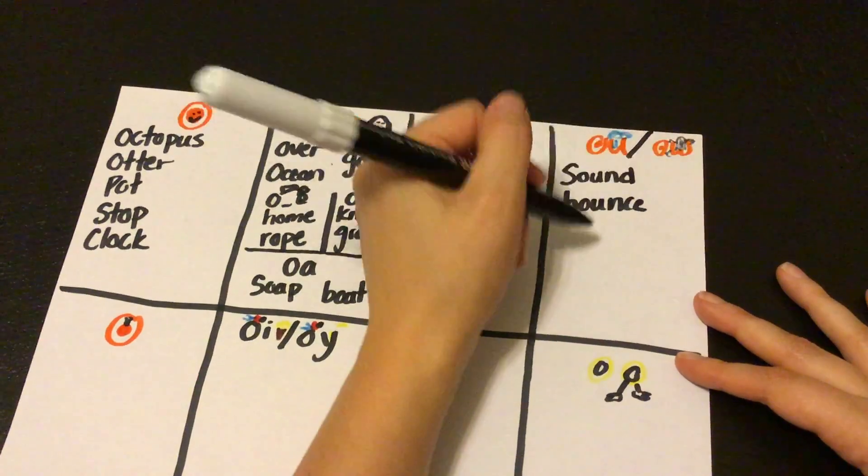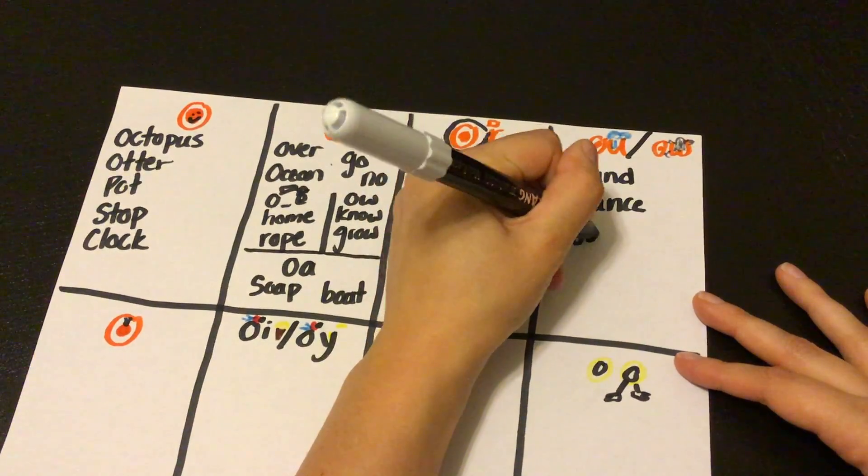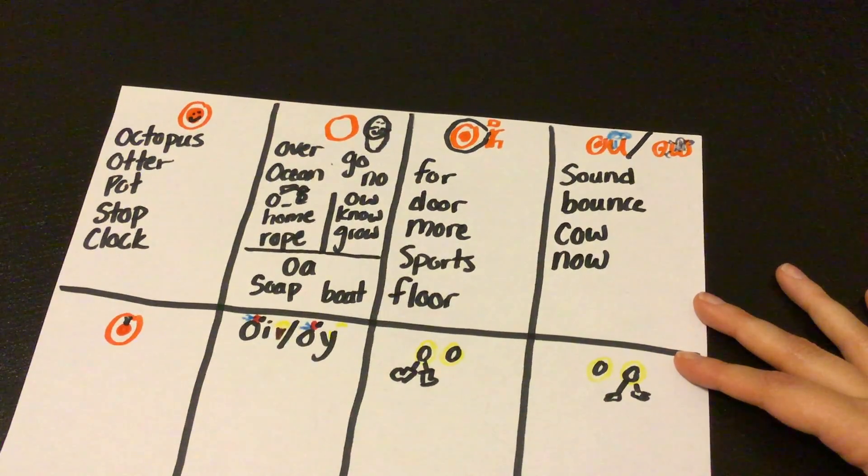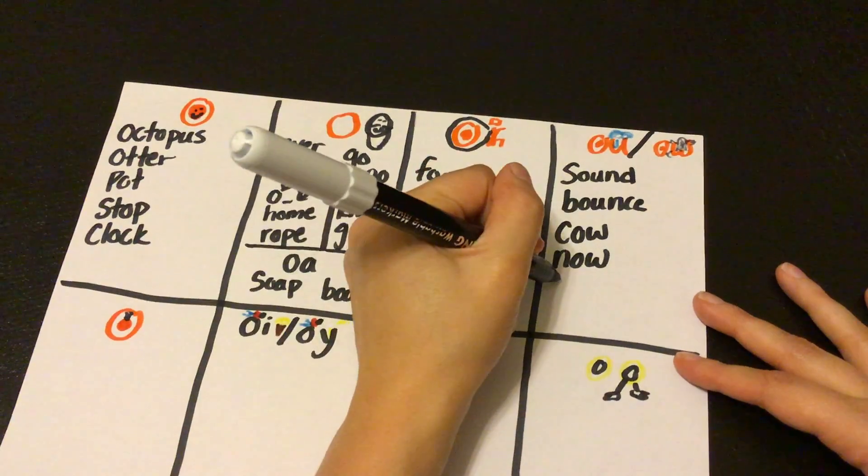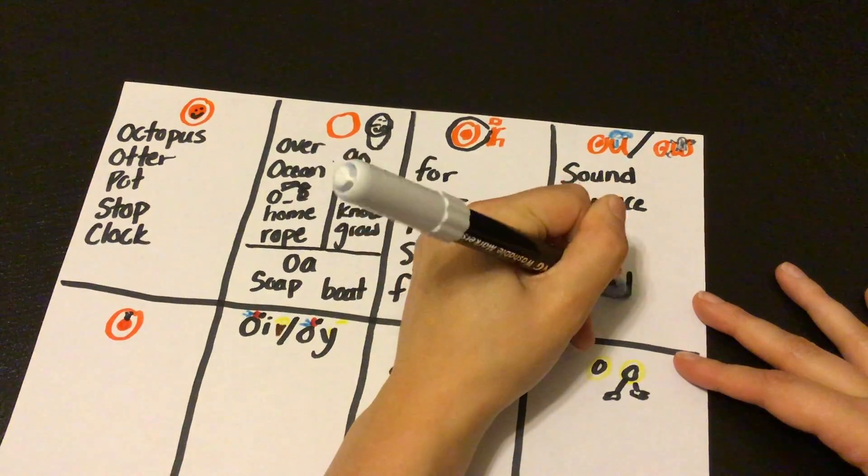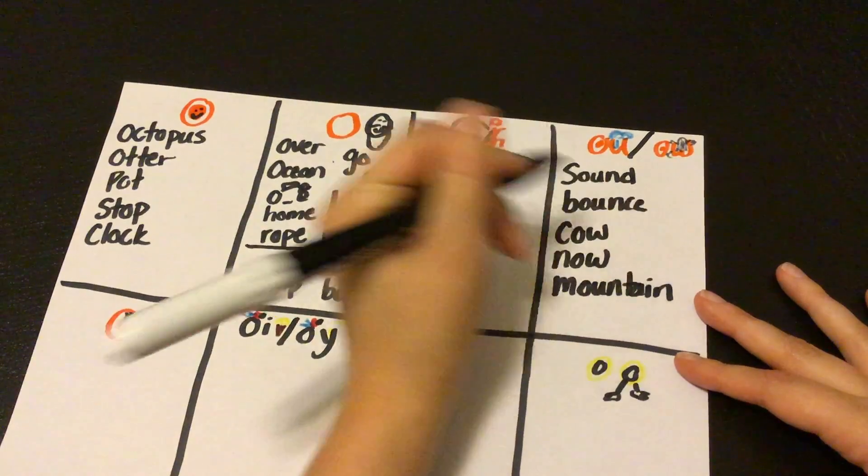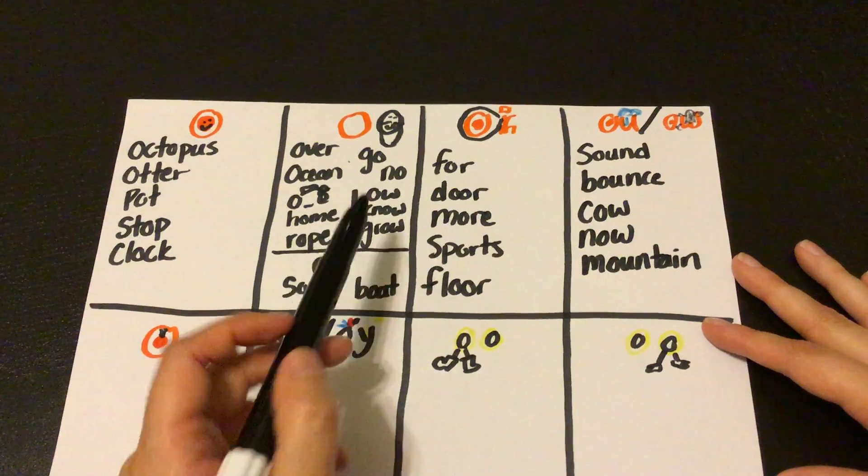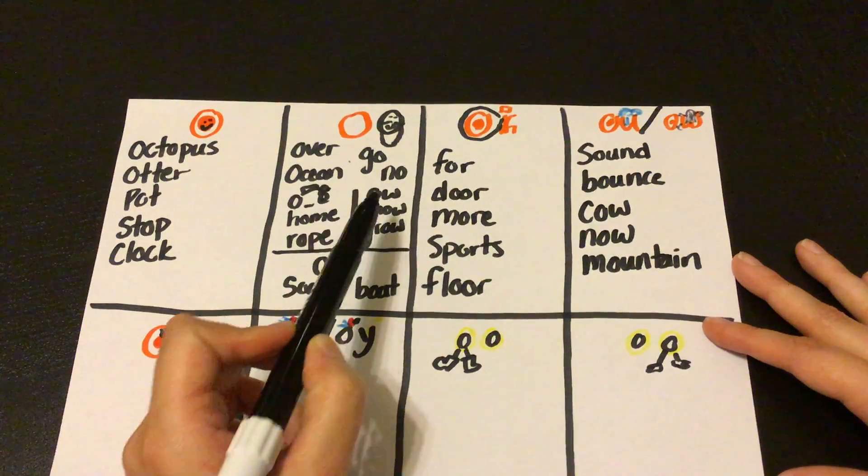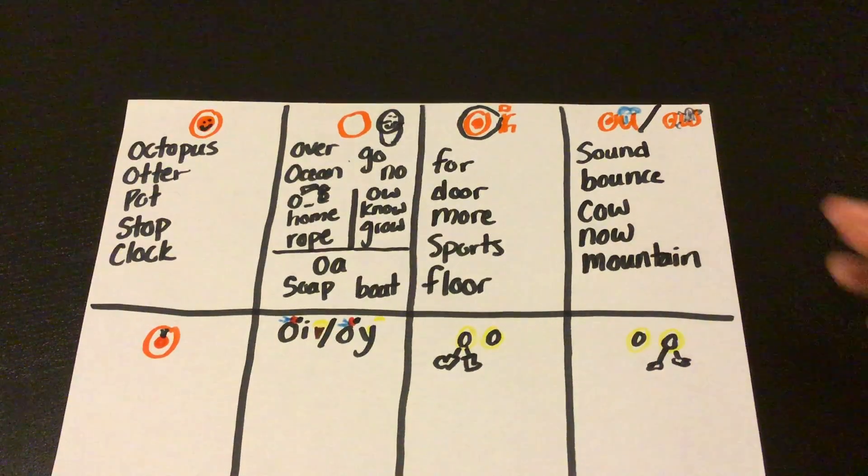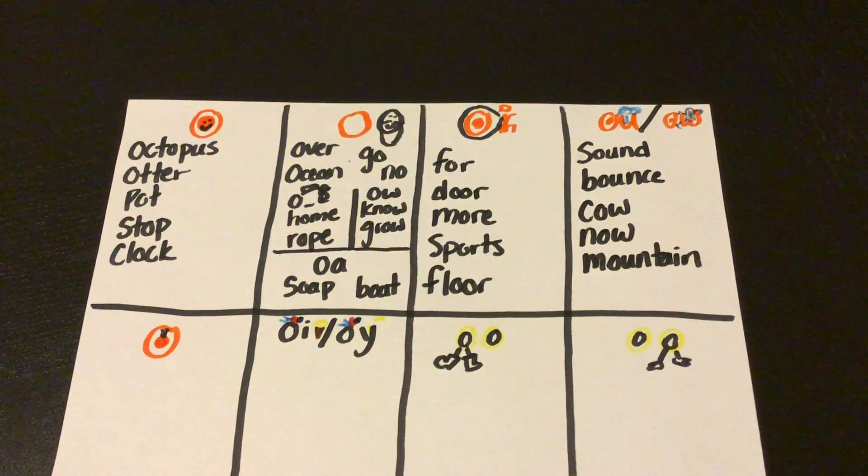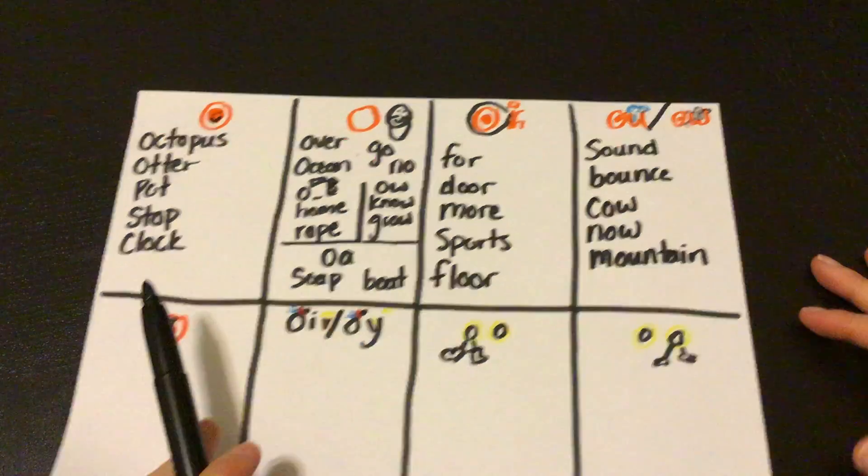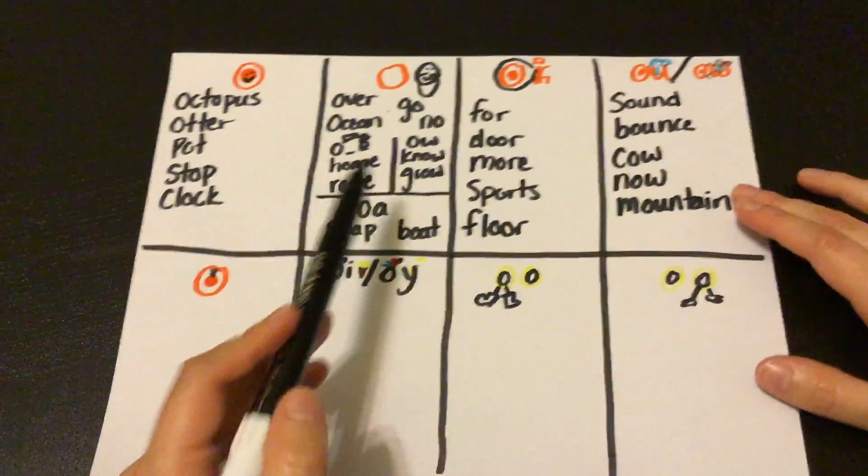Or cow has O-W, so does the word now, right? Mountain. Ow words. So we've got words like snow is an O-W word over here, but now is an O-W word over here. I don't know why. I wish that it wasn't that way, but just know that that O-W sound can make either O or ow.